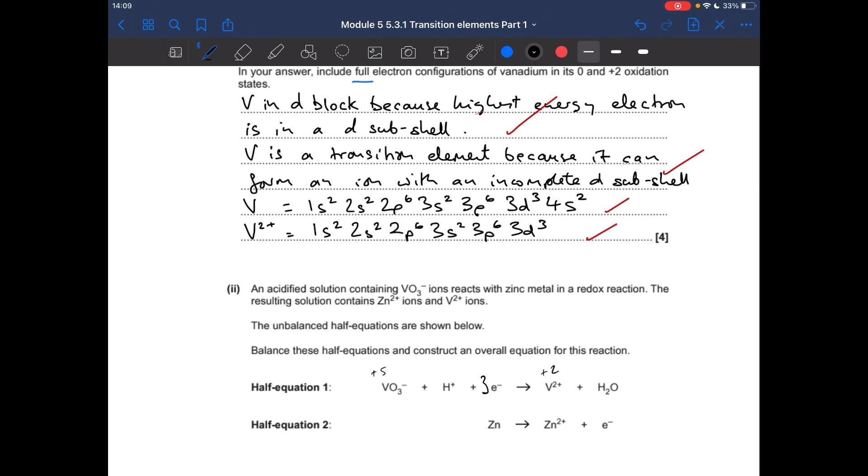Now we're going to balance the H pluses and we want the charge on the left and right to be the same. On the right the charge is 2 plus from the V2 plus ion. So we need the left hand side to be 2 plus as well. At the moment it is 1 minus and 3 minus, so overall 4 minus, but we need it to be 2 plus. So we need 6 H pluses and that'll take the charge on the left up to 2 plus. Then the final thing we do is balance the atoms. We've got 6 H's, so we'll need 3 H2O's and that sorts the oxygen out as well.